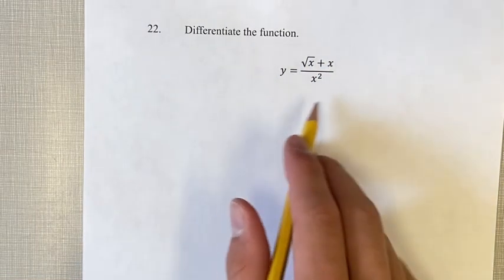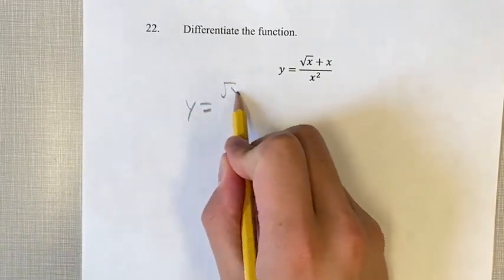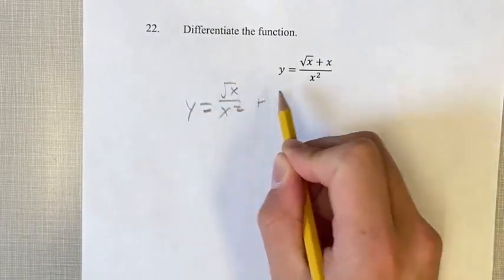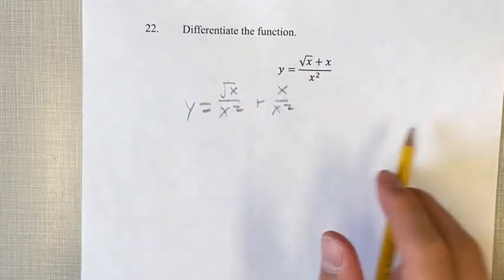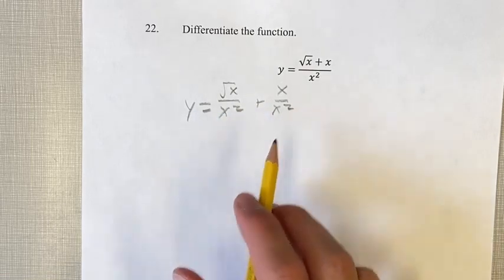This can be a little bit easier if we separate this fraction. We can do that by taking root x over x squared plus x over x squared. So just taking the two parts of the numerator, adding them together as they are in the numerator, and dividing them each separately.